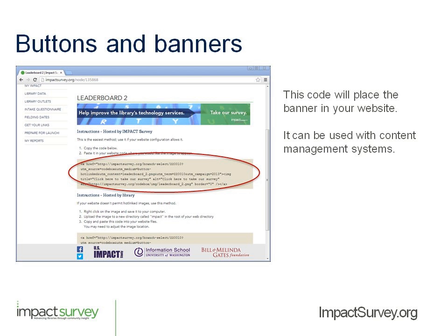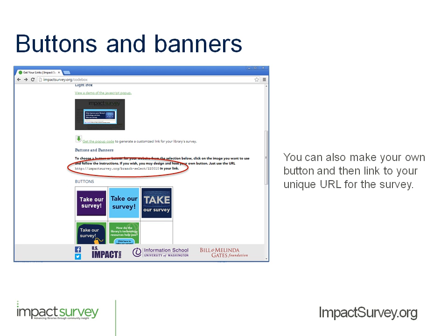This code can be used with your content management system. If you are using Drupal or WordPress or a site like that, you can use this too. You can also put a message on your library's Facebook page about the survey. If you want, you can also make your own button for the survey — we provide you with the core link, and if you have a particular style or don't like the buttons we're providing, you can certainly make an image of your own. If you have questions about that, we can help you and walk you through it.